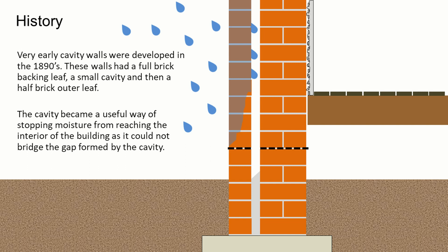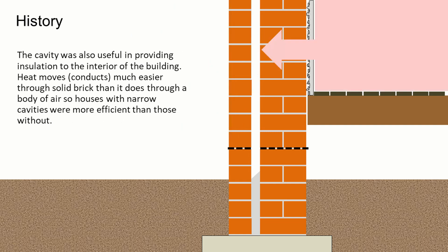Very early cavity walls were developed in the 1890s. These walls had a full brick backing leaf, a small cavity, and then a half brick outer leaf. The cavity became a useful way of stopping moisture from reaching the interior of the building, as it could not jump the gap formed by the cavity. The cavity was also useful in providing insulation to the interior of the building.